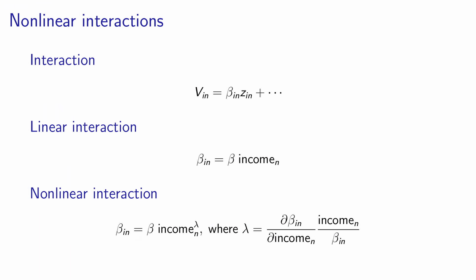And λ can be interpreted as the marginal modification of β as a function of income. So actually the mathematical definition of λ is the derivative of β with respect to income, which is normalized. So multiplied by income and divided by β. You can verify that this is valid. So this extension to the interaction is a nonlinear extension involving a new parameter, λ, which should be estimated from data.